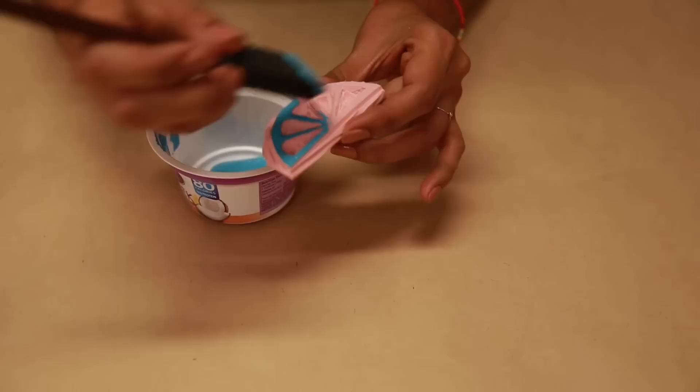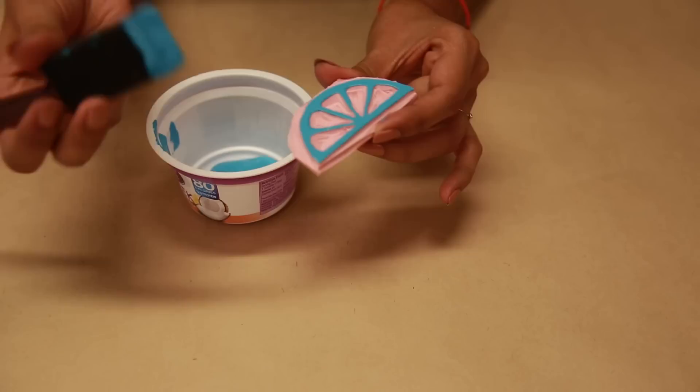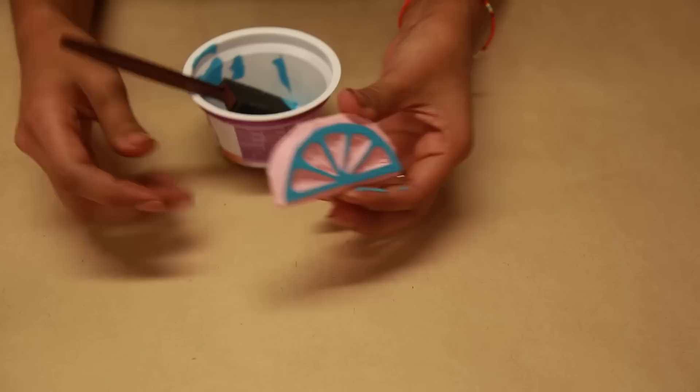When you're done carving, all you have to do is apply the paint right onto the stamp. You don't need a lot of paint. Just fill it up so that it has a little thin coat.